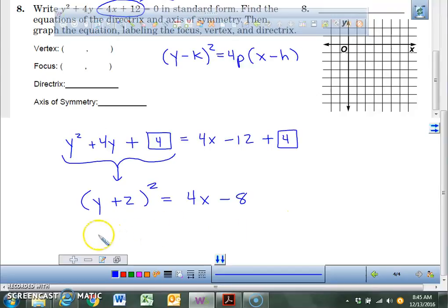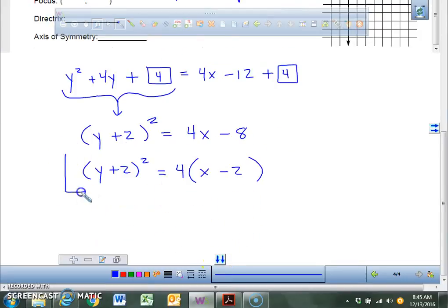We're almost done. This part is done. We have y plus 2 squared. That's done. This side, we actually have to factor out the 4. So we're going to factor out the 4. We have an x here. So 4 times what is a negative 8? 4 times a negative 2 is a negative 8. And this right here, everybody, is your standard equation for the parabola. From this, we can graph all the information that we need to graph.